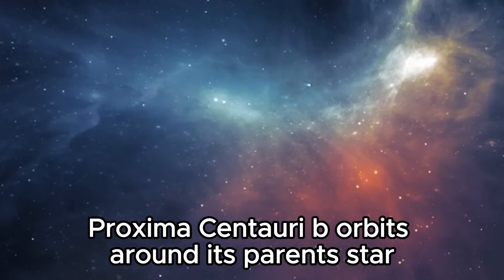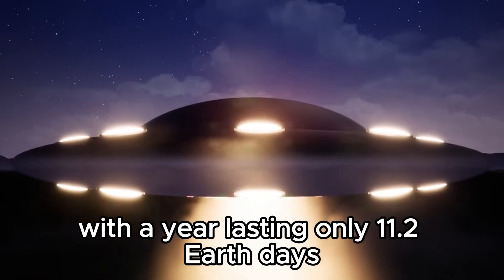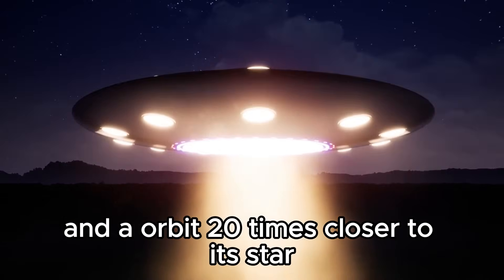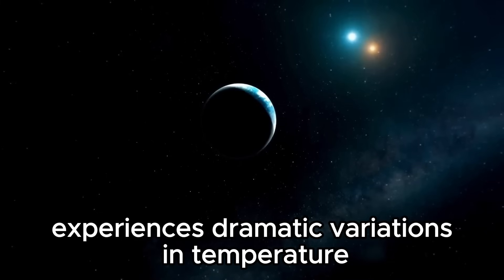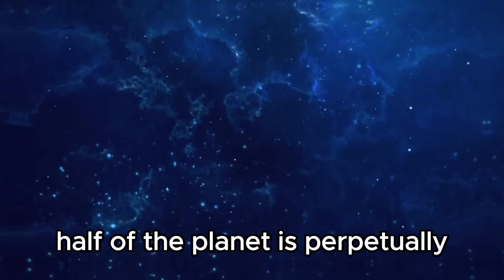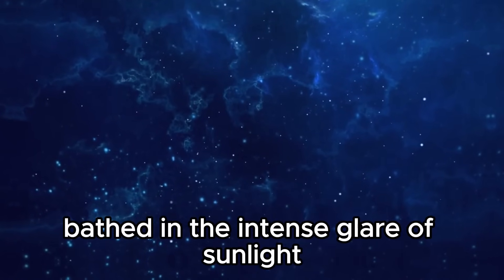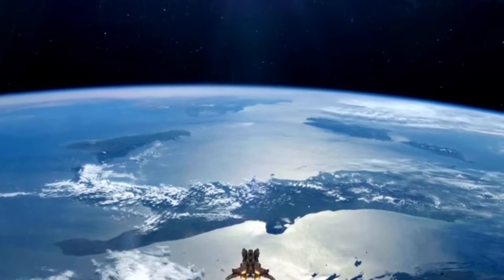Proxima Centauri b orbits around its parent star at a frenetic pace, with a year lasting only 11.2 Earth days and an orbit 20 times closer to its star than Earth is to the Sun. Proxima b experiences dramatic variations in temperature and illumination. One half of the planet is perpetually bathed in the intense glare of sunlight, while the other is plunged into a deep, penetrating darkness.